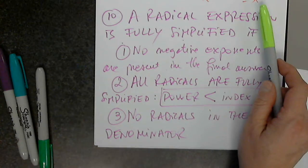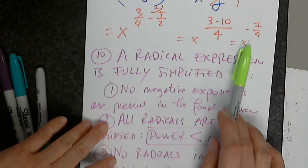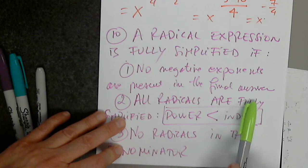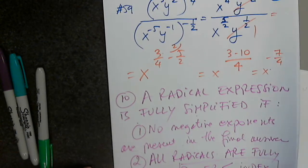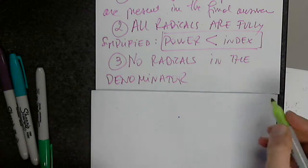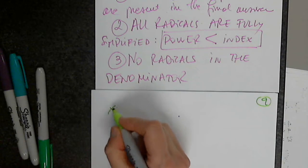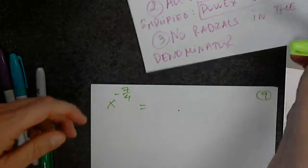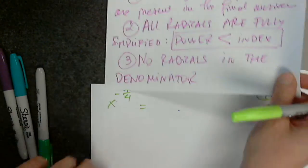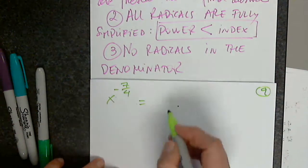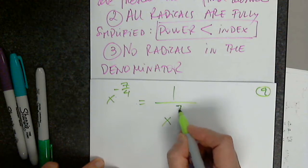So now I have to continue with this — this is not fully simplified because condition number one is not fulfilled. Our problem is x raised to negative 7 fourths. In order to fulfill the first condition, it equals 1 over x raised to 7 fourths.